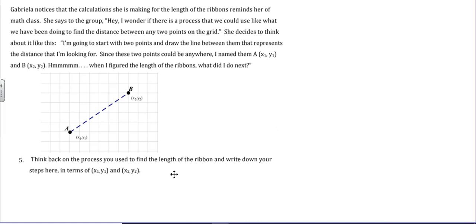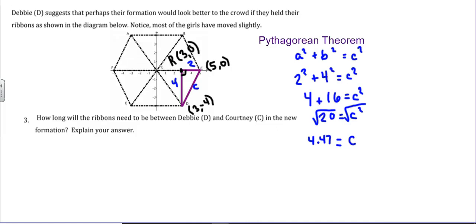So we need to think back to the process that we used to find the length of the ribbon and write down our steps here in terms of x₁, y₁, and x₂, y₂. So remember our steps before, we realized we were going to use the Pythagorean theorem. So we needed a right triangle. So we drew the right triangle, wrote down the Pythagorean theorem.